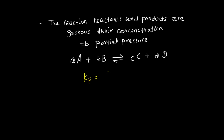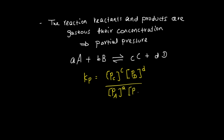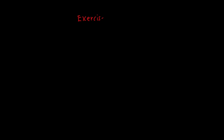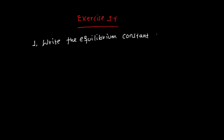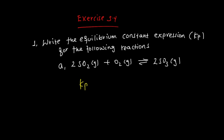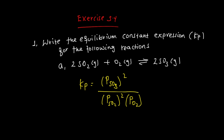For Kp, the equilibrium constant is expressed using partial pressures. Kp equals the partial pressure of C to the power of c, times the partial pressure of D to the power of d, divided by the partial pressure of A to the power of a, times the partial pressure of B to the power of b. The unit of partial pressure is atmospheres. Exercise: Write the Kp expression for the reaction where sulfur dioxide and oxygen react to form sulfur trioxide. Kp equals partial pressure of SO3 to the power of 2, divided by partial pressure of SO2 to the power of 2 times partial pressure of O2.